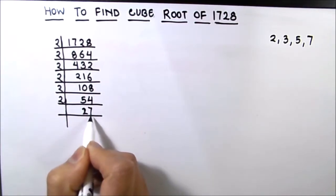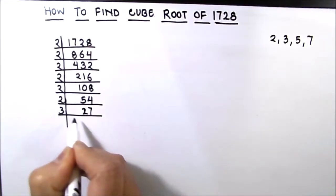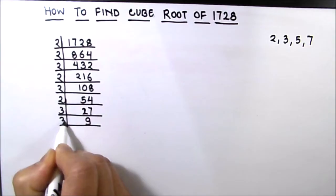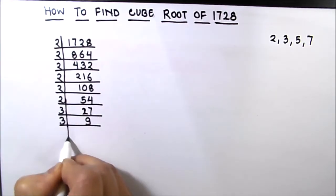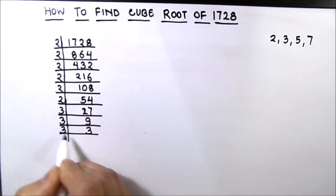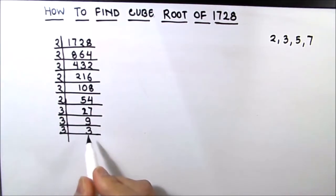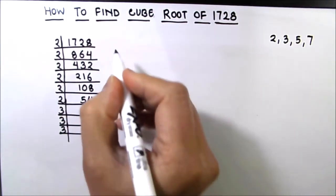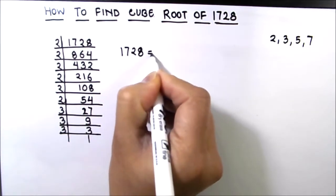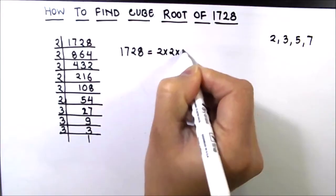Now this is an odd number, so we are going to use the next prime number, which is 3. 3 times 9 is 27, and 9 is divisible by 3, so 3 times 3 is 9, and 3 times 1 is 3. Now the number is fully divided and we got the factors of 1728 as 2 times 2 times 2 times 2 times 2 times 2 times 2 times 3 times 3 times 3.